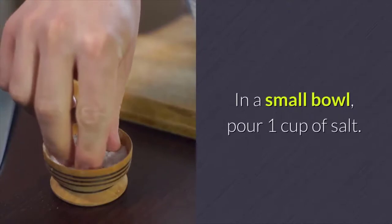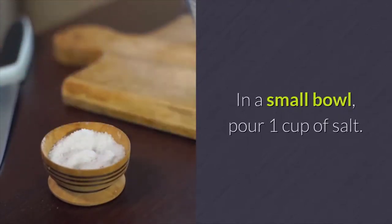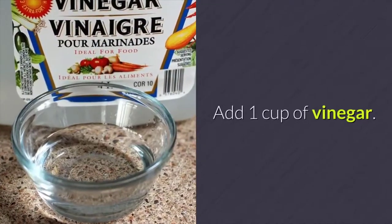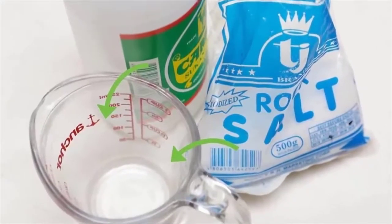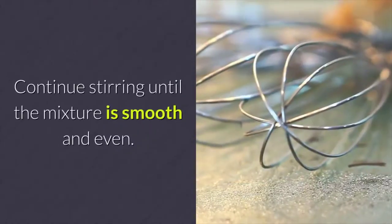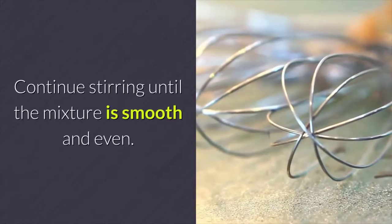Mix salt and vinegar. In a small bowl, pour 1 cup of salt. Add 1 cup of vinegar. Stir well so the salt soaks up all the vinegar. Continue stirring until the mixture is smooth and even.